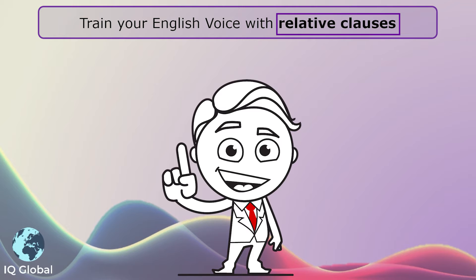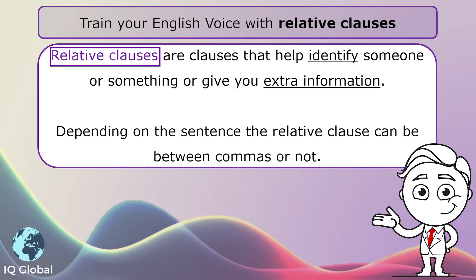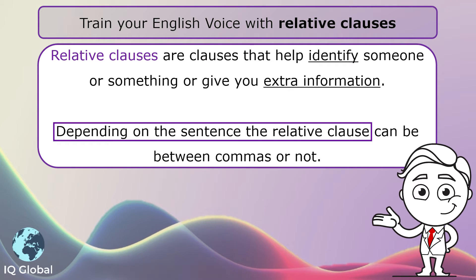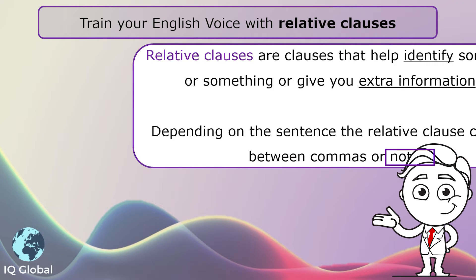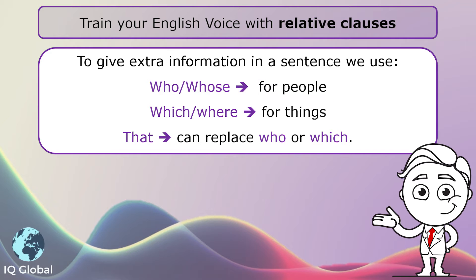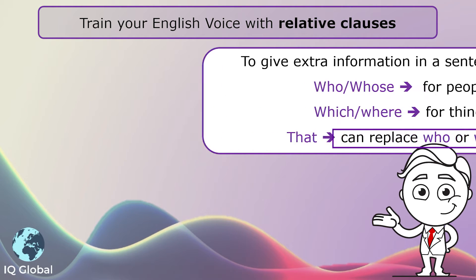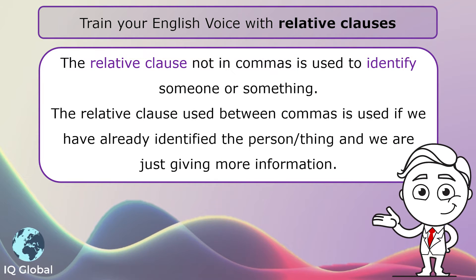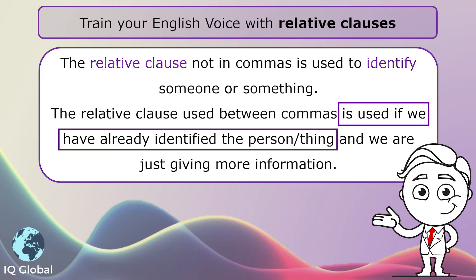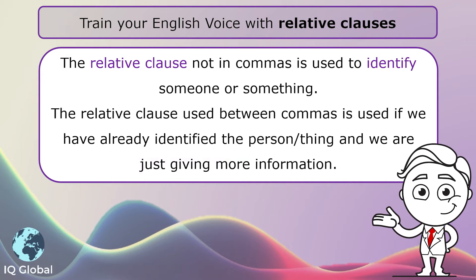Train your English voice with relative clauses. Relative clauses are clauses that help identify someone or something, or give extra information. Depending on the sentence, the relative clause can be between commas or not. To give extra information in the sentence, we use who or whose for people, which or where for things, and that can replace who or which. The relative clause not in commas is used to identify someone or something. The relative clause used between commas is used if we have already identified the person or thing and we are just giving more information.